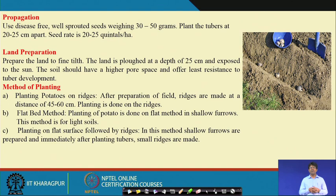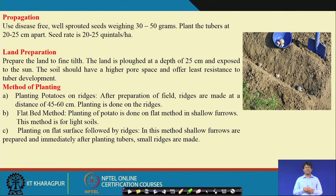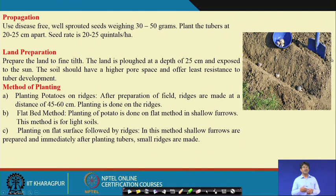For planting, there are generally three methods: planting on ridges, the flatbed method, or flat surface followed by ridges. In the ridge and furrow system, ridges are made using special implements. The distance between ridges is around 45 to 60 cm (row spacing), and tuber spacing within each row is around 25 to 30 cm.